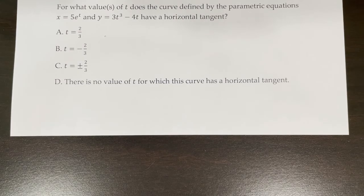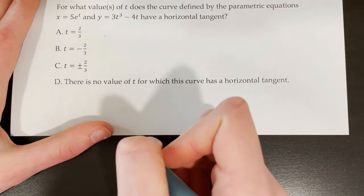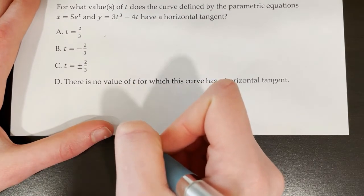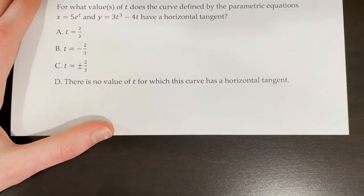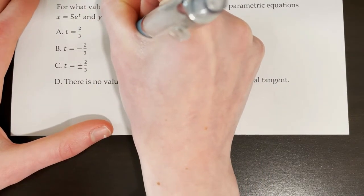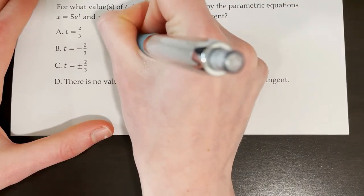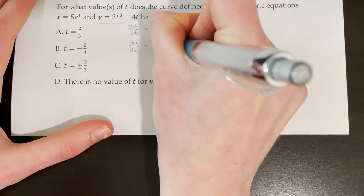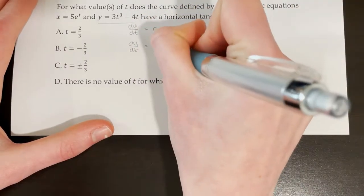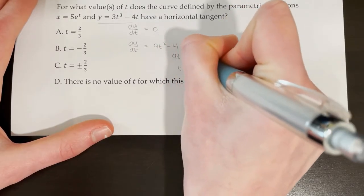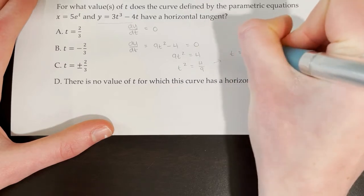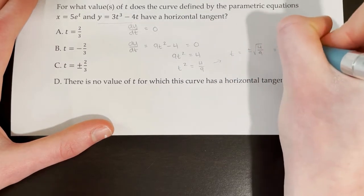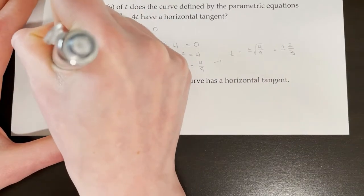A curve is defined by x = 5eᵗ and y = 3t³ − 4t. For what values of t does this curve have a horizontal tangent? A horizontal tangent requires dy/dt = 0. dy/dt = 9t² − 4 = 0, so t² = 4/9 and t = ±2/3. Therefore, choice C is correct.